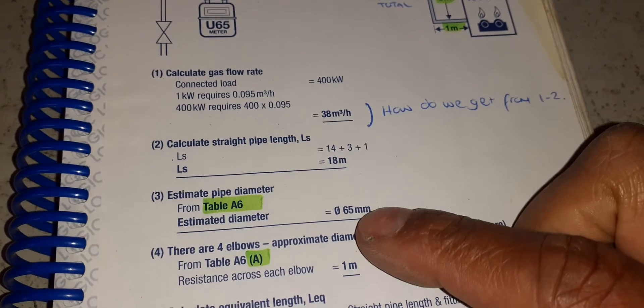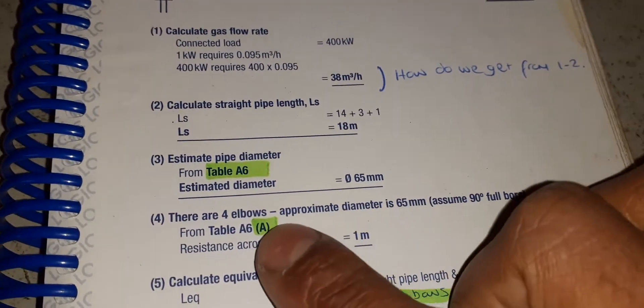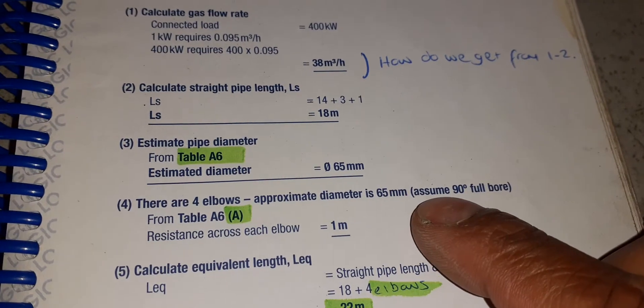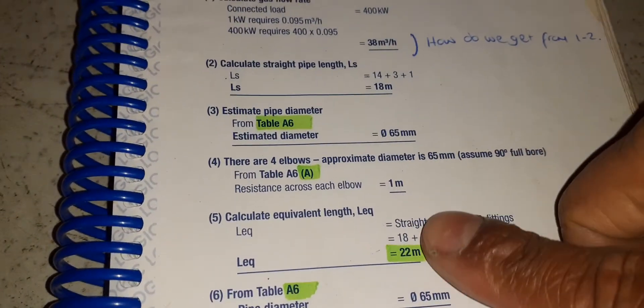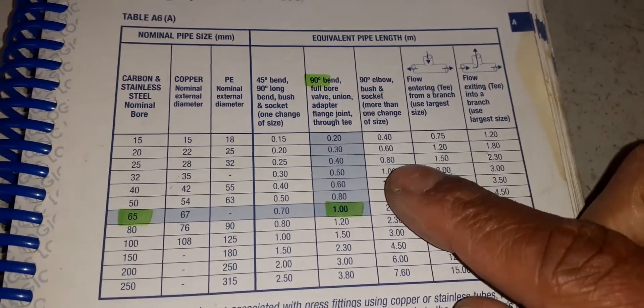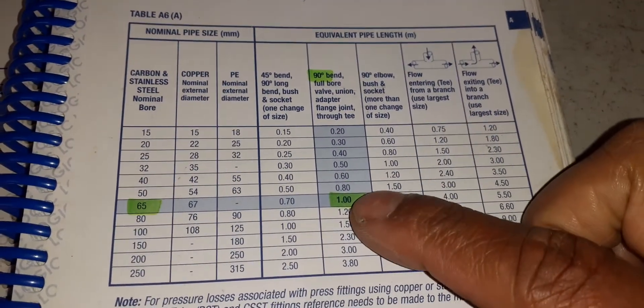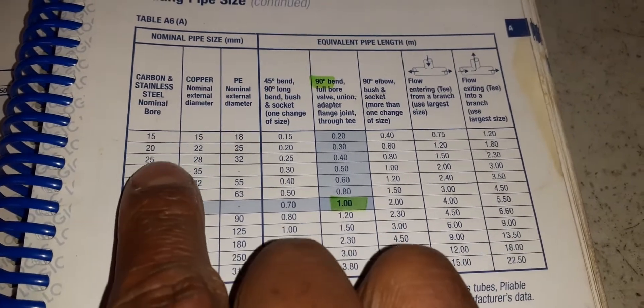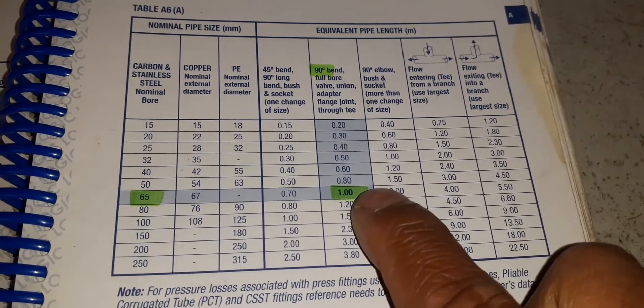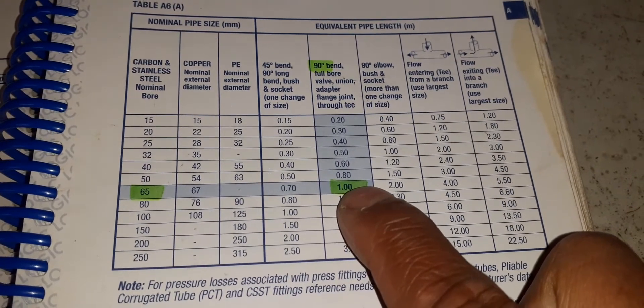So now to add restrictions - there are four elbows, approximate diameter is 65 millimeters. So in order to see restrictions for elbows or tees and so on, in our book here it shows us this is our type of pipework that we're dealing with: 65 millimeters, one meter worth of restriction for every elbow.